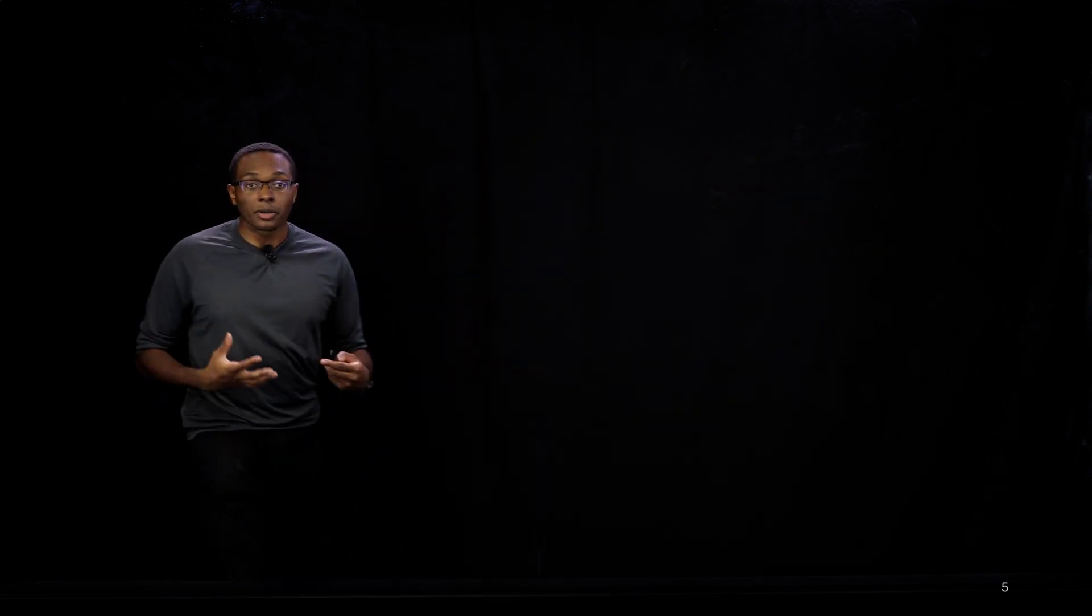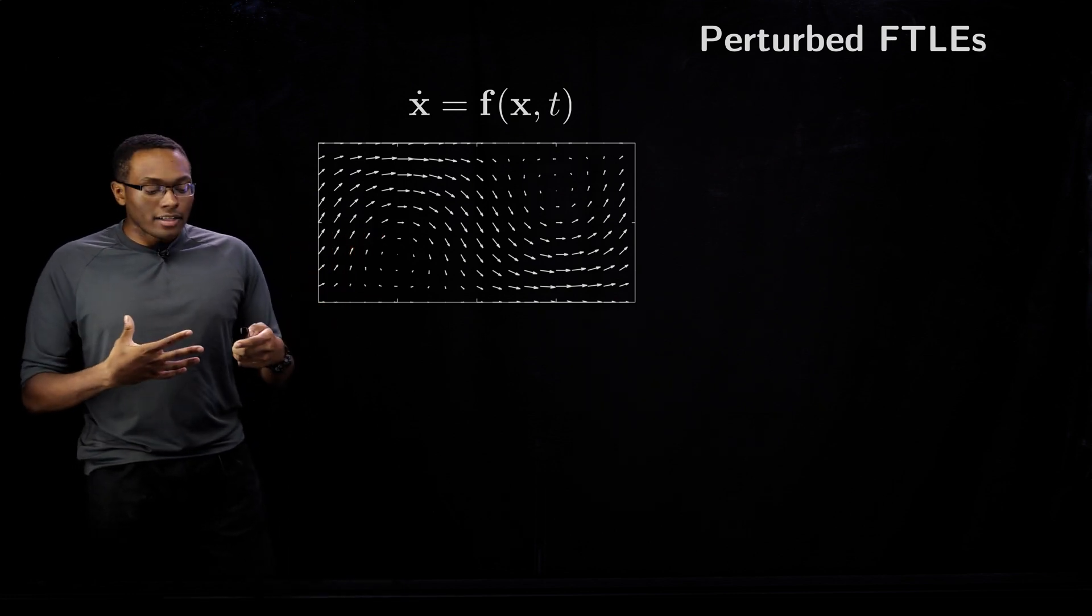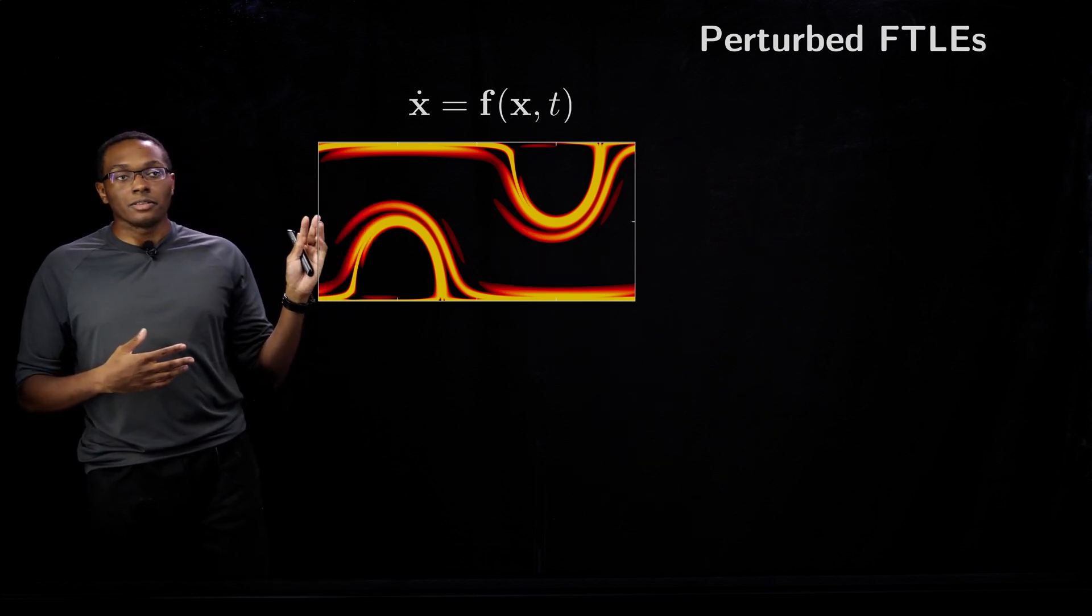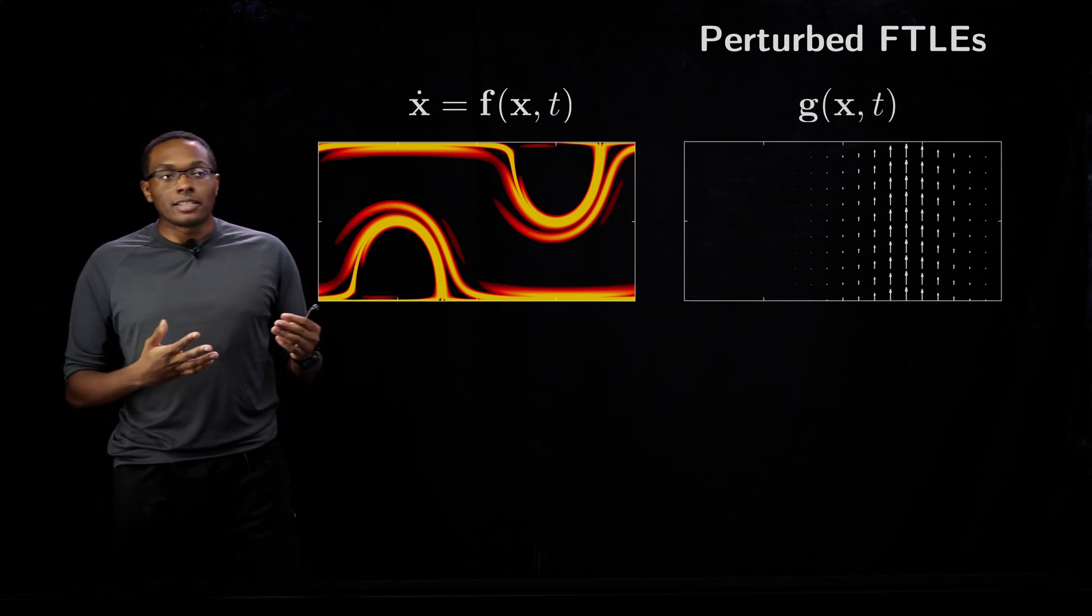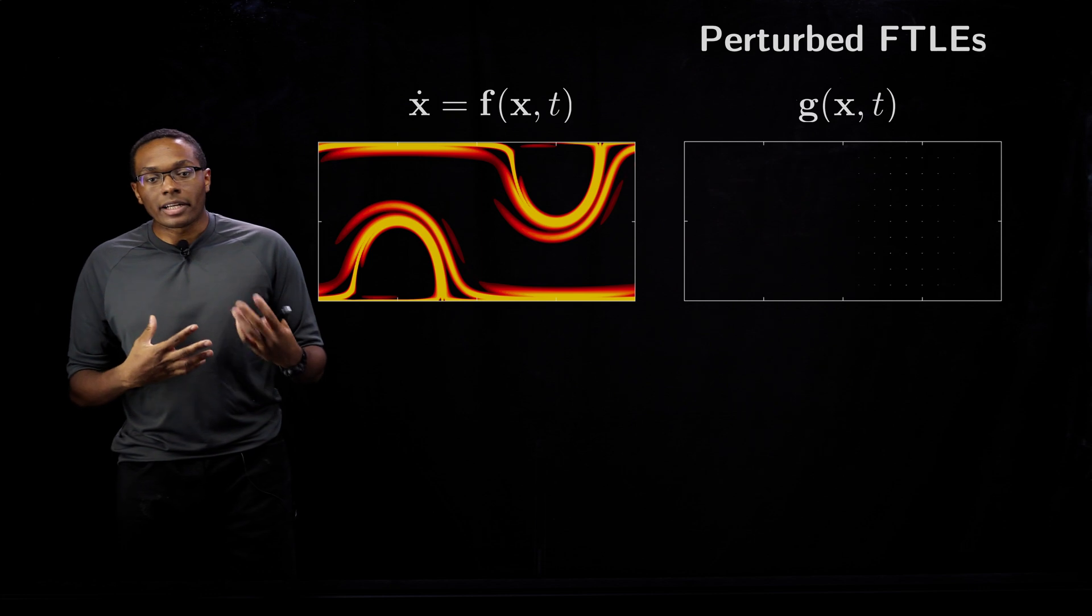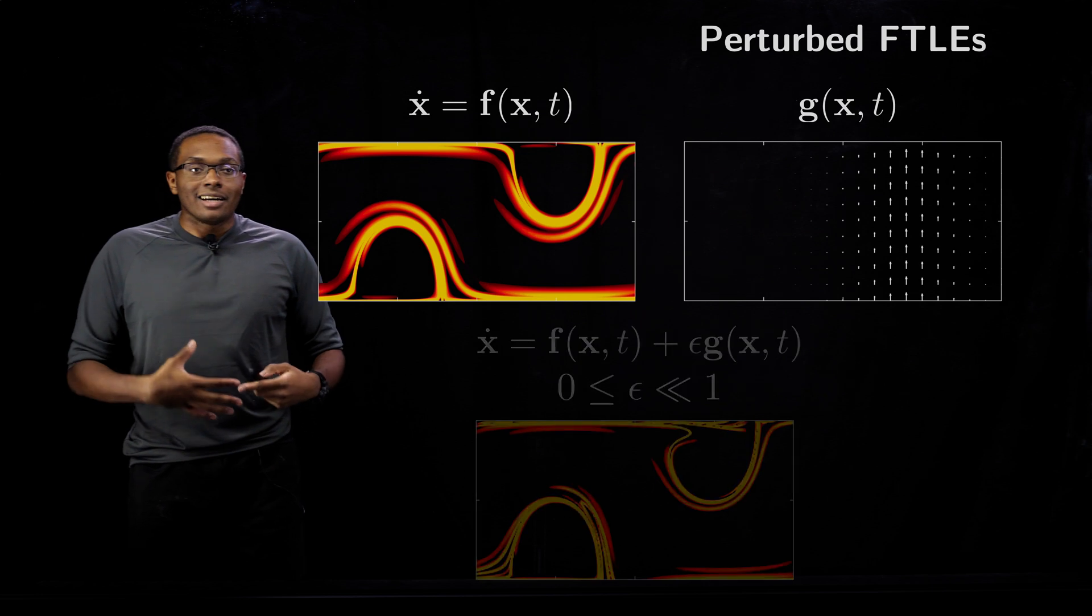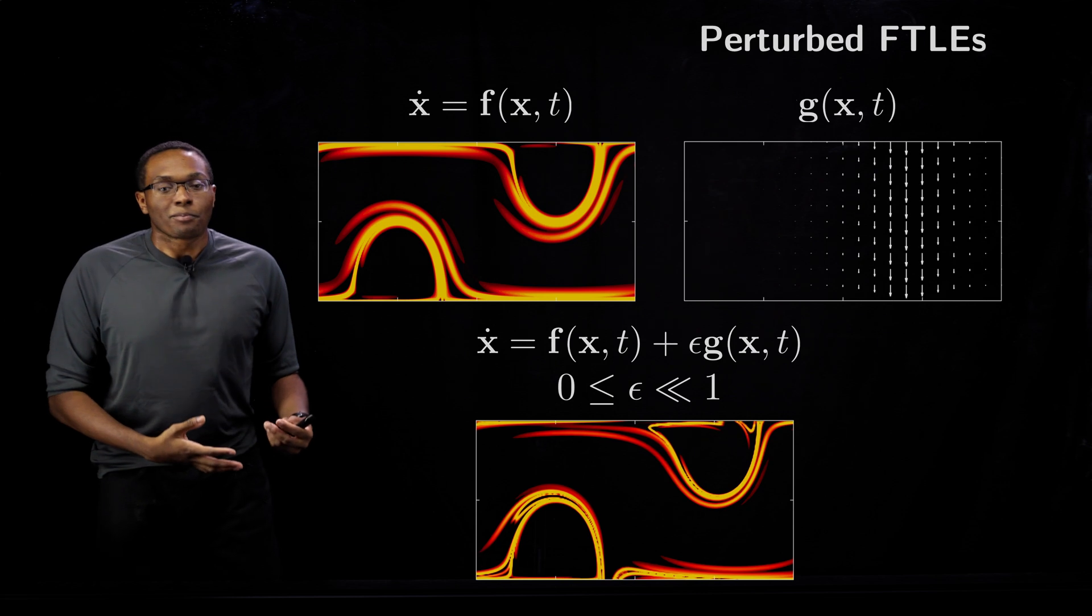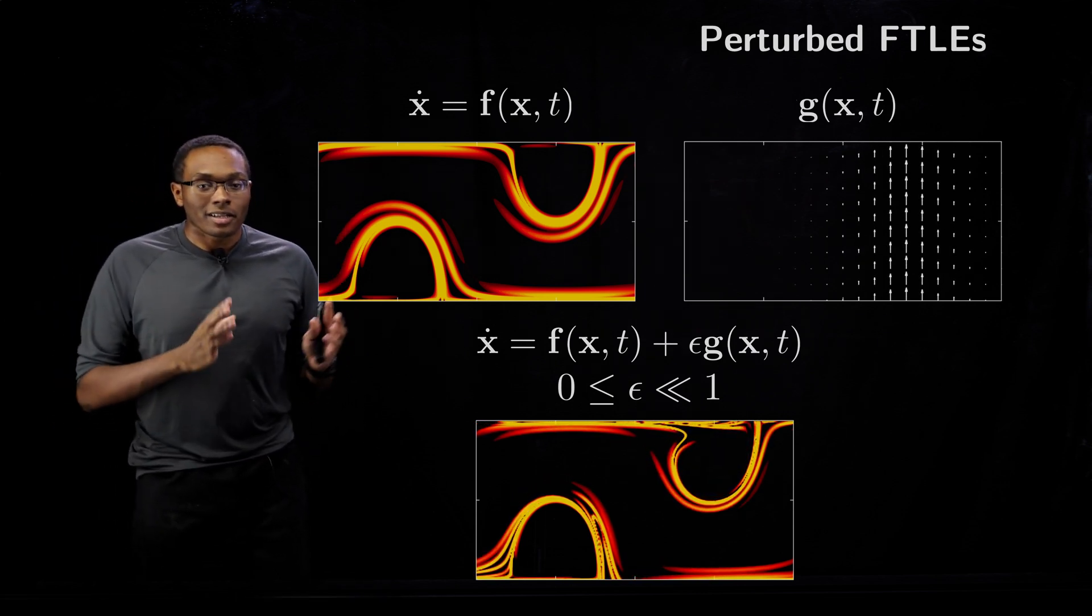What's really interesting about these structures is what happens when you perturb them. Let's consider this dynamical system, which can be thought of as part of an ocean current. This is the forward FTLE field, showing two U-shaped structures. Now let's consider a second dynamical system, perhaps an atmospheric air current that is periodically moving up and down. If we combine these two together, the air current is perturbing the ocean currents.